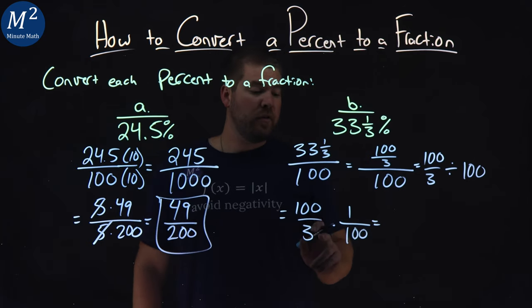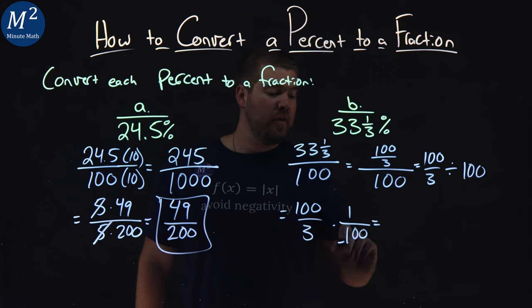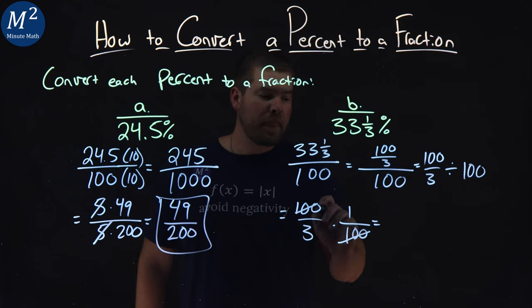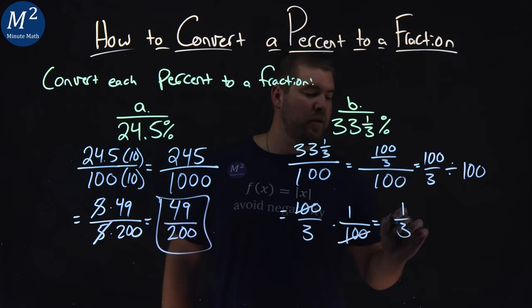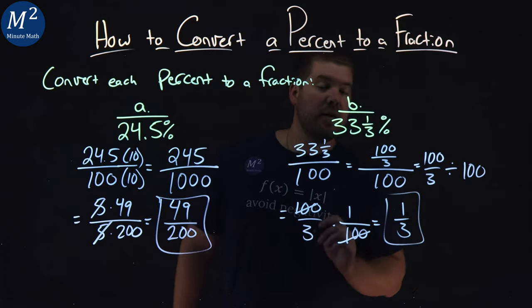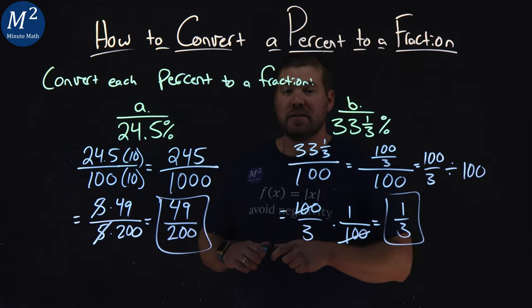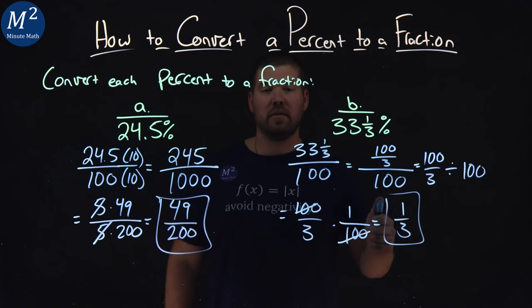From there, 100 over 3 times 1 over 100, the hundreds cancel, and we're left with just 1 third. And there we have it. 33 and 1 third percent is equivalent to the fraction 1 third.